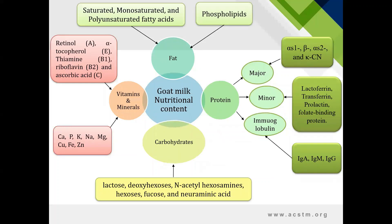Now looking at the diagram, the given diagram illustrates all the major nutrients present in goat milk. The protein contained in goat milk is majorly categorized into three categories: major, minor and immunoglobulins. Immunoglobulins such as immunoglobulin A, M and G have a major role in development of antibodies in infants and also help in prevention of various diseases and allergies. Fat is commonly present in two forms: saturated, monounsaturated and polyunsaturated fatty acids, and secondly phospholipids. The major carbohydrates present are as discussed in the earlier slide.